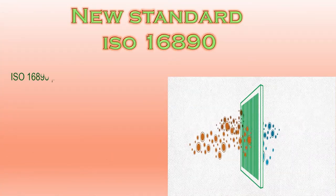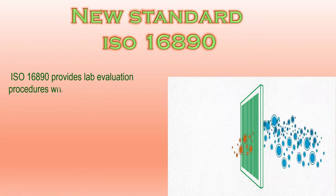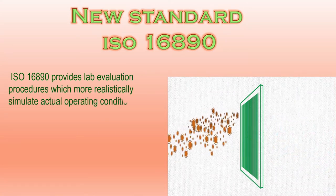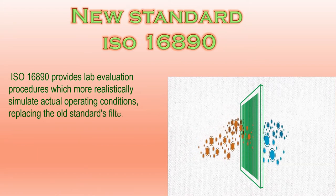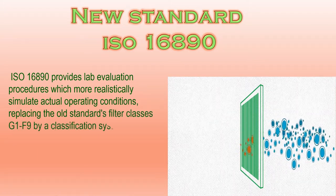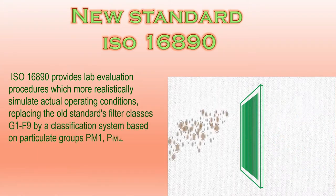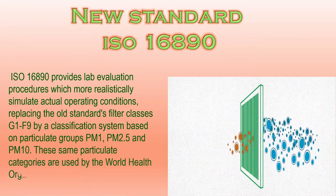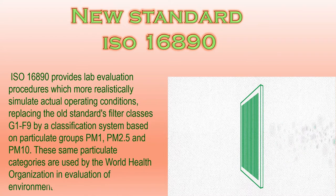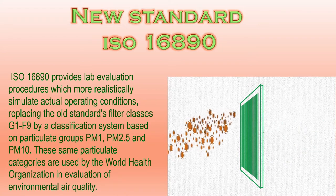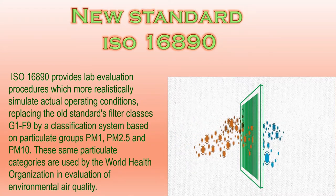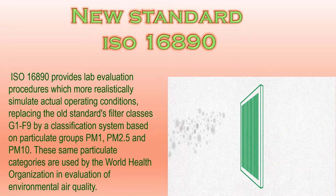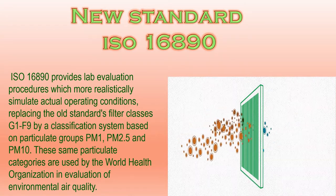ISO 16890 provides lab evaluation procedures which more realistically simulate actual operating conditions. It replaces the old filter classes G1 to F9 with a classification system based on particulate groups PM1, PM2.5, and PM10. These same particulate categories are used by the World Health Organization in evaluation of environmental air quality.